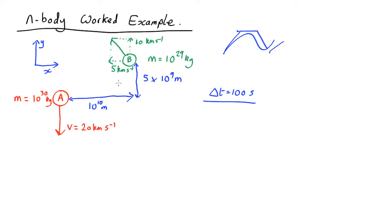So let's take object B, its initial position. x is 10 to the 10. y is 5 by 10 to the 9. z which will be out of this screen here is nothing. And now we can ask what's its position after time delta t.